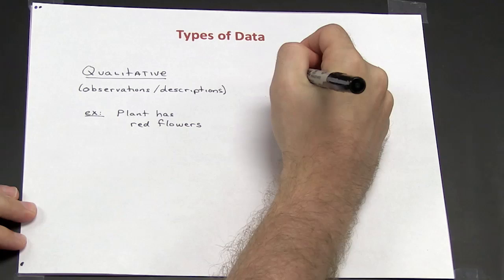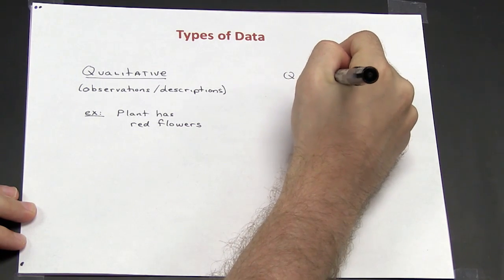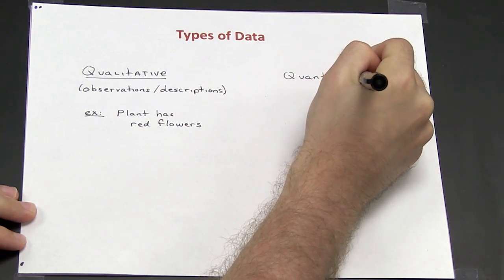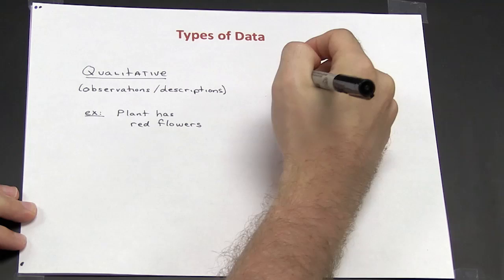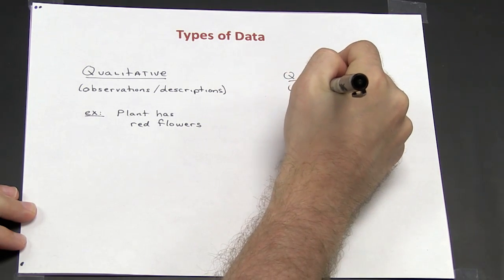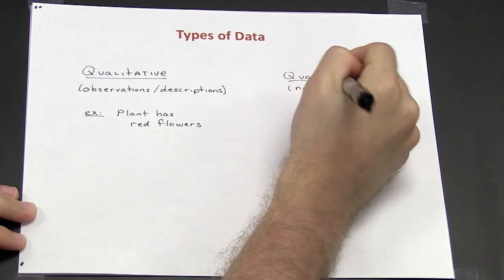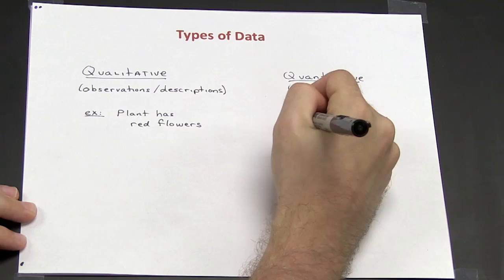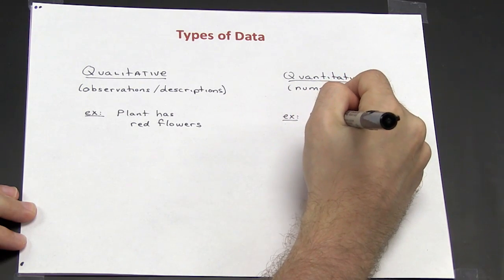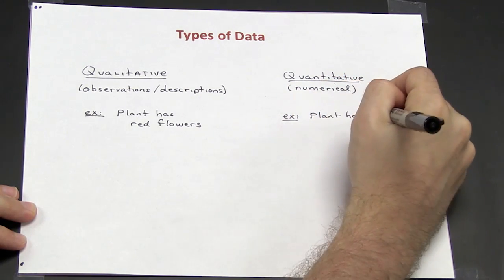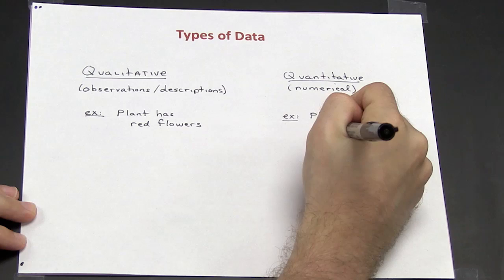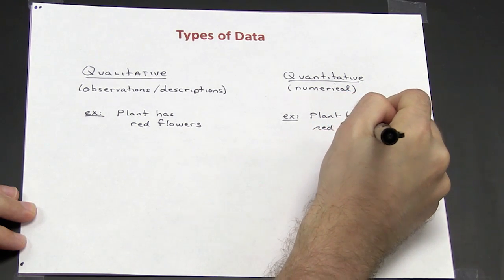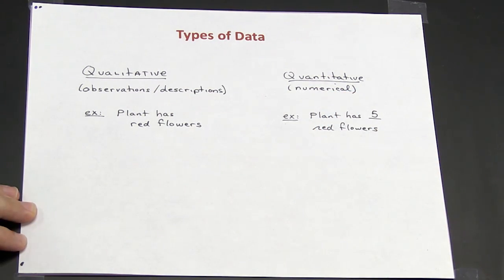The other type of data is quantitative, and quantitative data is numerical. So for example, if I said that the plant has five red flowers, that would be an example of quantitative data.